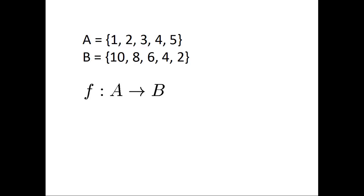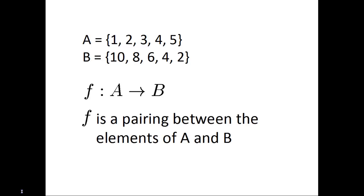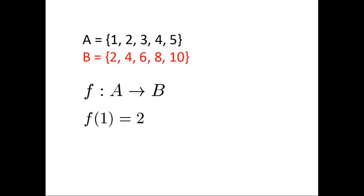Since the elements don't really matter in terms of order, as long as we find a pairing, let's just list B as {2, 4, 6, 8, 10}. And let's try pairing 1 and 2 together, so that f(1) equals 2. Let's try the function f(x) equals x plus 1. Then we have f(2) equals 3, but 3 is not in B, so f does not work.